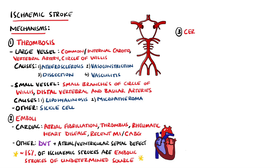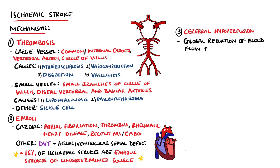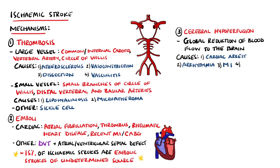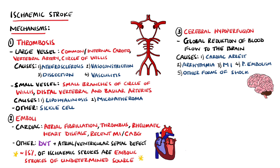Next, we have cerebral or systemic hypoperfusion, which is a global reduction in blood flow to the brain. This is most commonly caused by a reduction in cardiac output, either through cardiac arrest or arrhythmias, or even myocardial infarction or pulmonary embolism. It can also occur secondary to other forms of shock. Areas of brain supplied by the distal-most branches of the main cerebral arteries are most at risk, as flow to these points is the first to diminish. These are known as watershed areas.